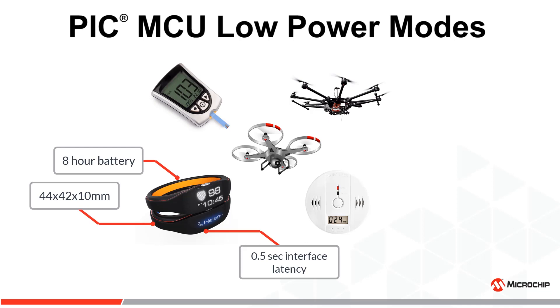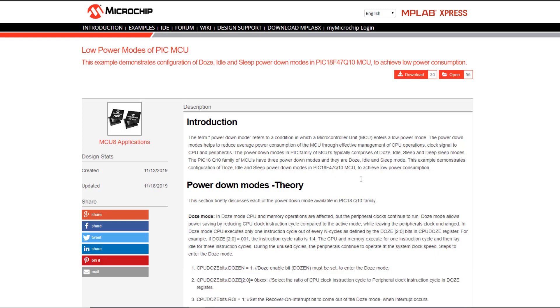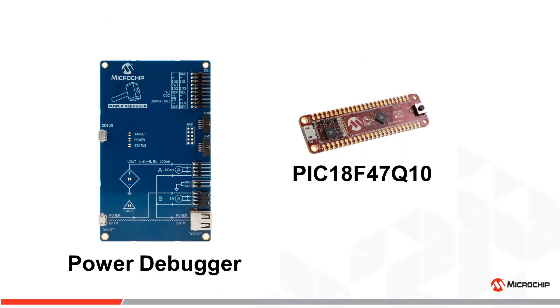To demonstrate this, we are going to look at an application linked in the description that uses the Power Debugger and Curiosity Nano platform to analyze the performance and power consumption characteristics of different types of low power modes on PIC microcontrollers.